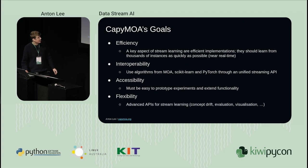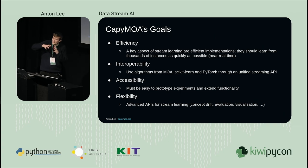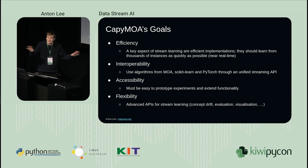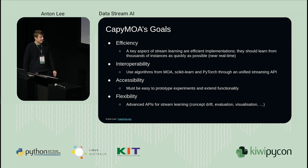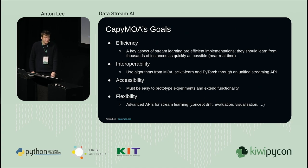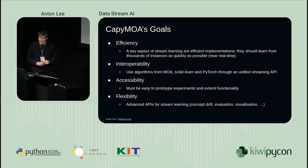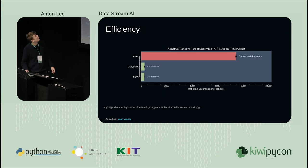And then finally is flexibility. Within the niche of stream learning, there's a thousand different ways to do it and a thousand different problems to solve. We want to cater to a broad selection of those because a lot of the people working on Capimoa with us are researchers with specific niches. So we're efficient - we're very fast. We're beating River.